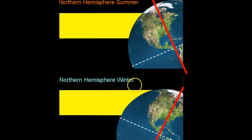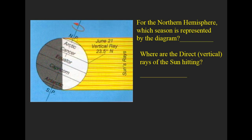And also, a smaller area being heated, as in the summer, gives us more intense heat in the summer. So for the northern hemisphere, which season is represented by this diagram? And where are the direct rays, or vertical rays, hitting in this diagram?